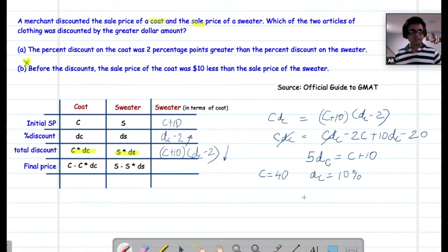if we take a value of DC less than 10%. So let's take a scenario where DC equals 8%. The LHS CDC would be $3.2 and RHS, which is the sweater's total discount. C plus 10 and DC minus 2 would be 50 multiplied by 6%. So that would be 3. And the sign would be this way.